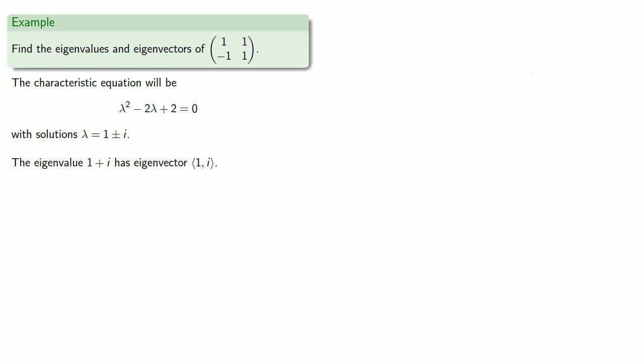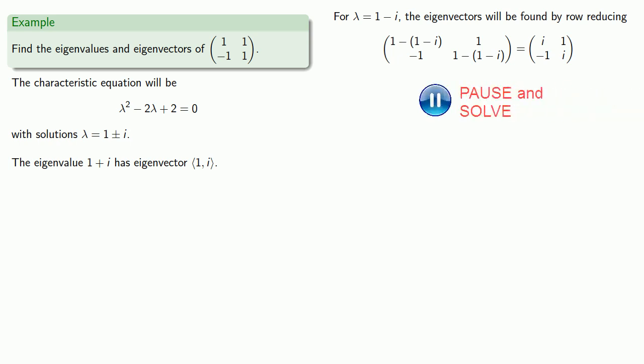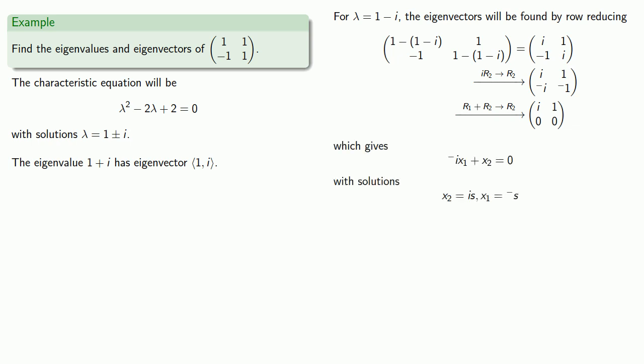For the eigenvalue 1 minus i, the eigenvectors will be found by row reducing the matrix. And we'll have our solution negative i x1 plus x2 equals 0. And our solutions parameterized will be x2 equals i s, x1 equals negative s. This time we'll let s equal negative 1 and that will give us the eigenvector.